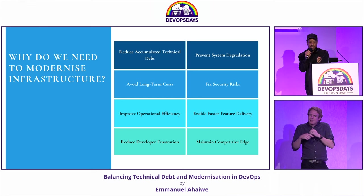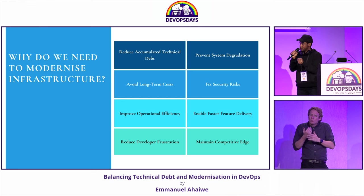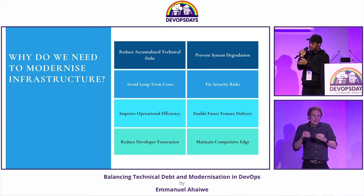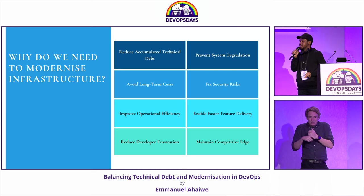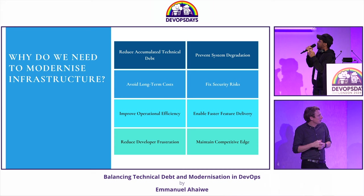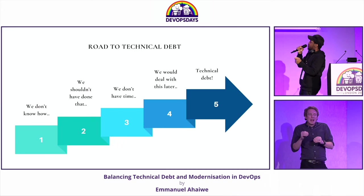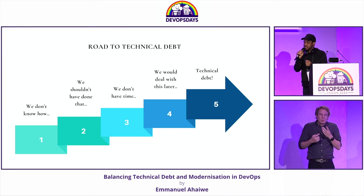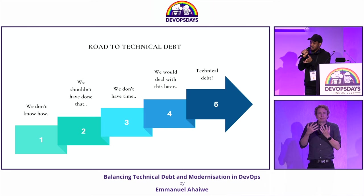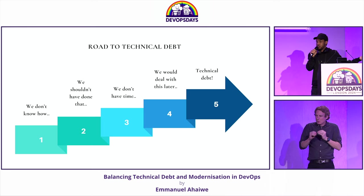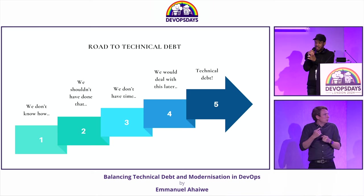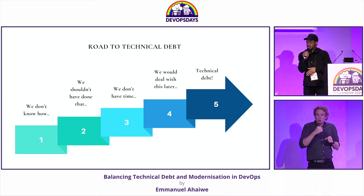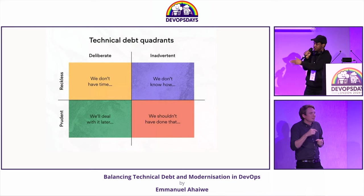So how do we modernize infrastructure while still balancing and moving technical debt? We need to reduce accumulated technical debt. We need to prevent developer frustration. How we arrive at technical debt is sometimes we don't know what we're doing — we're learning on the job. We shouldn't have done that, we'll deal with this later. And that is the road to technical debt.